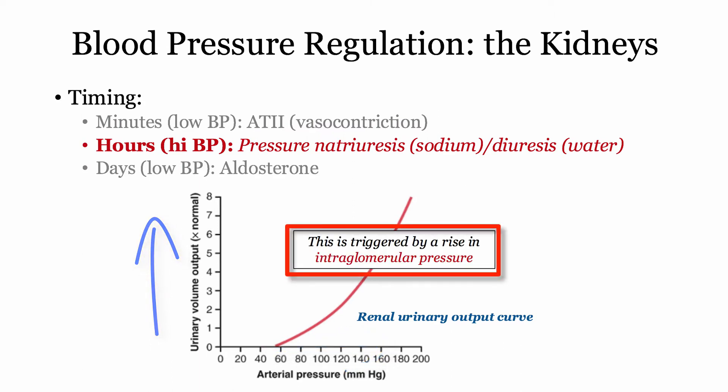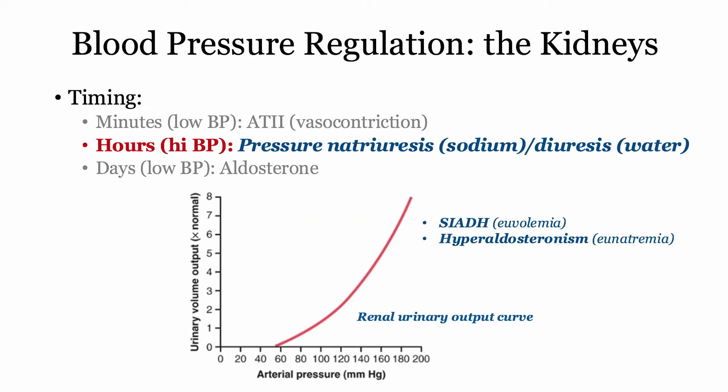This is triggered by a rise in the intraglomerular pressure. And here is the major derivative that comes up repeatedly in discussions of SIADH and hyperaldosteronism. Students are angry at the notion that SIADH can be described as a euvolemic state — they assume you're absorbing all that extra water, so the patient should be volume overloaded. Here it is: pressure diuresis. You hit a point, and the kidney starts secreting the excess water.